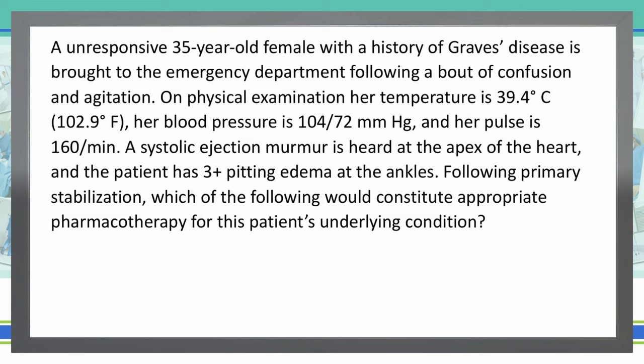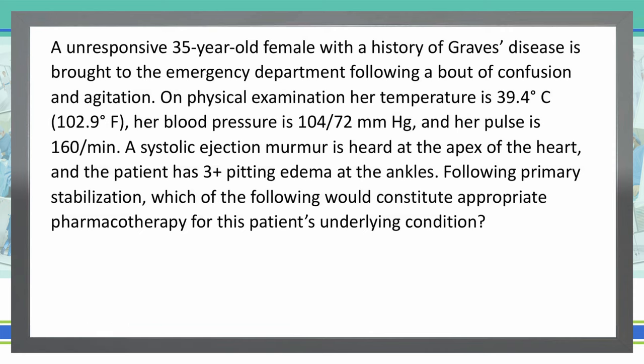An unresponsive 35-year-old female with a history of Graves' disease is brought to the emergency department following a bout of confusion and agitation. On physical exam, her temperature is 39.4 degrees Celsius, or 102.9. Her blood pressure is 104 over 72, and her pulse is 160 per minute. A systolic ejection murmur is heard at the apex of the heart, and the patient has 3-plus pitting edema at the ankles.